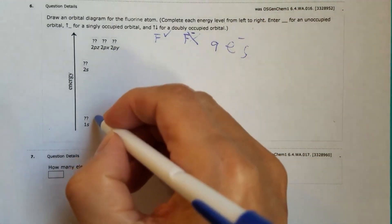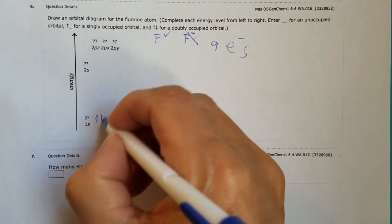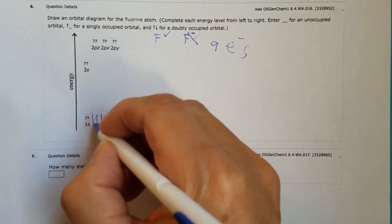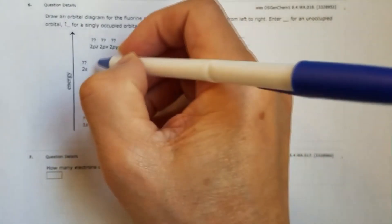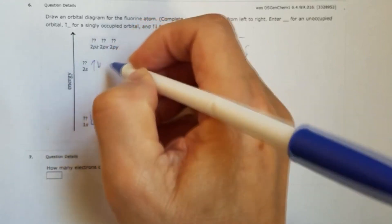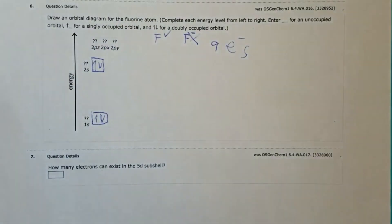Put that in there, and then for 1s orbital, we'll have two paired electrons. Then the next one is 2s. We should have another two. All right, so this is the 2s.